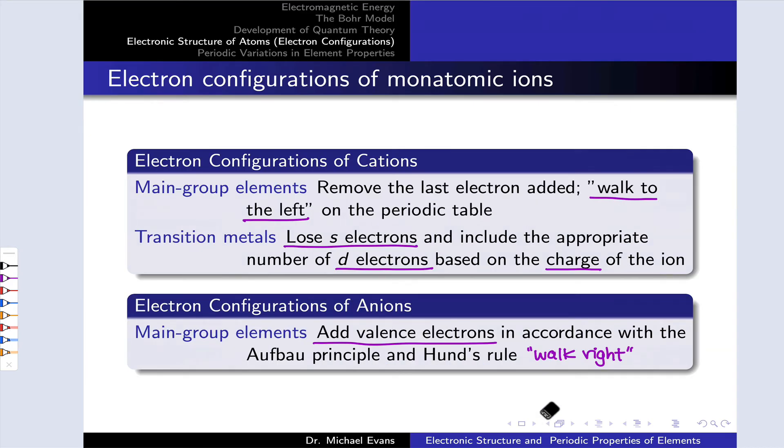Finally, let's say a few words about cations and anions. For the main group elements, cations of the main group metals in group 1 and 2 of the periodic table, we simply remove the last electron that we added. We walk to the left for each positive charge, so one spot to the left for a plus 1 charge, two spots to the left for a plus 2 charge.